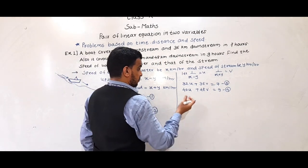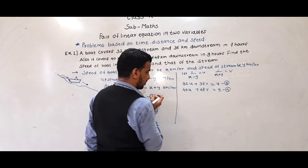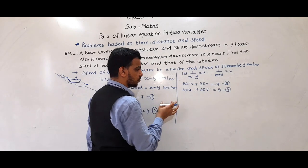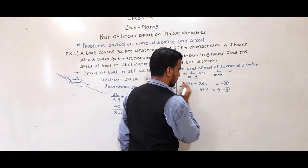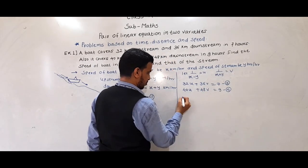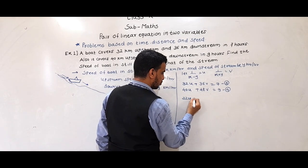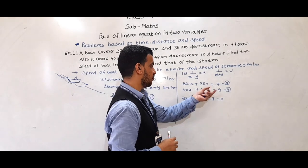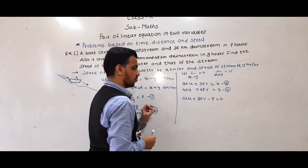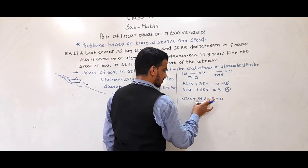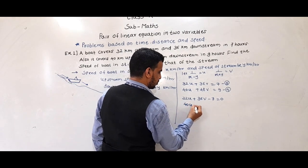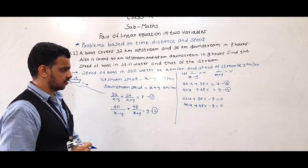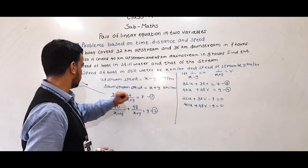We can solve these by any method. We will use the cross multiplication method. For that, we rewrite the equations in the form ax plus by plus c equals zero. So equation 3 becomes: 32u plus 36v minus 7 equals 0, and equation 4 becomes: 40u plus 48v minus 9 equals 0.